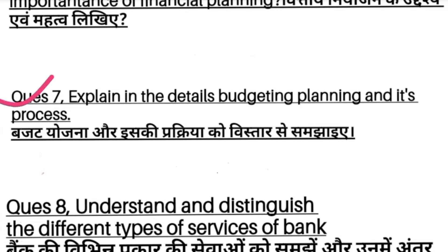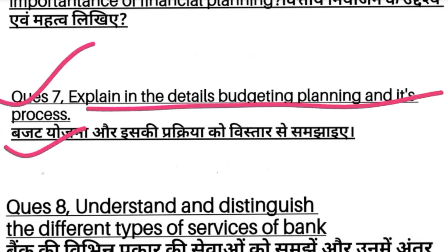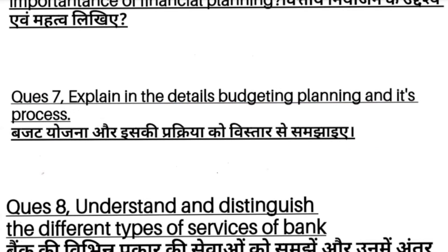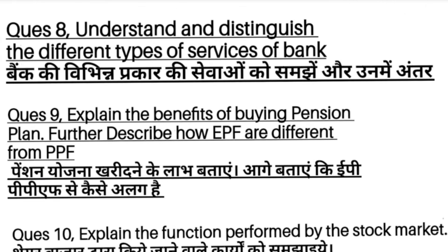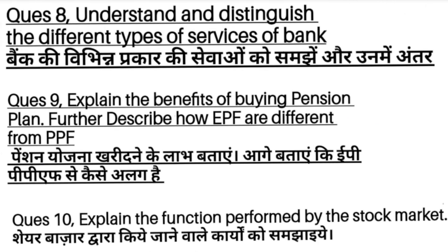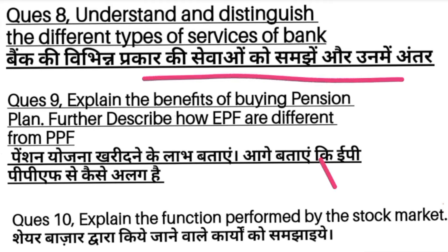Question number 7: Explain the details of budgeting and planning and its process — explain the budget and your financial planning process. Question number 8: Explain the different types of banking, banking processes, and bank information. Explain the answers to all of these.